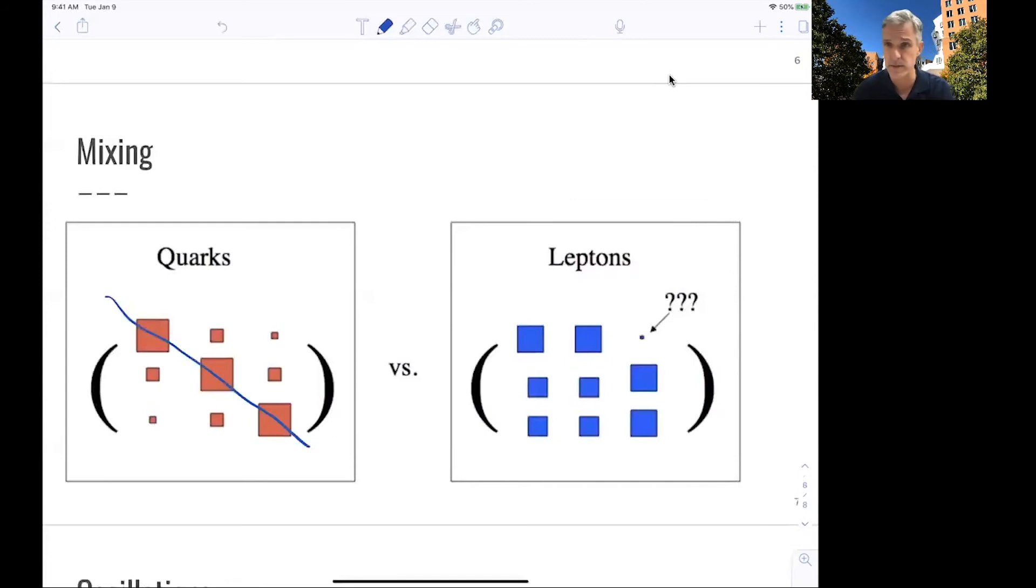Here in the lepton sector, the situation seems to be quite different. We have a later lecture where we look at the actual parameters and their numerical values. But what you see here is that there is more like a democracy between the individual values. So the question is, do we have sensitivity to the complex phase? We can only have that sensitivity if the value of this matrix element is non-zero. And this has been observed already. So that's good news in order to allow further neutrino studies.